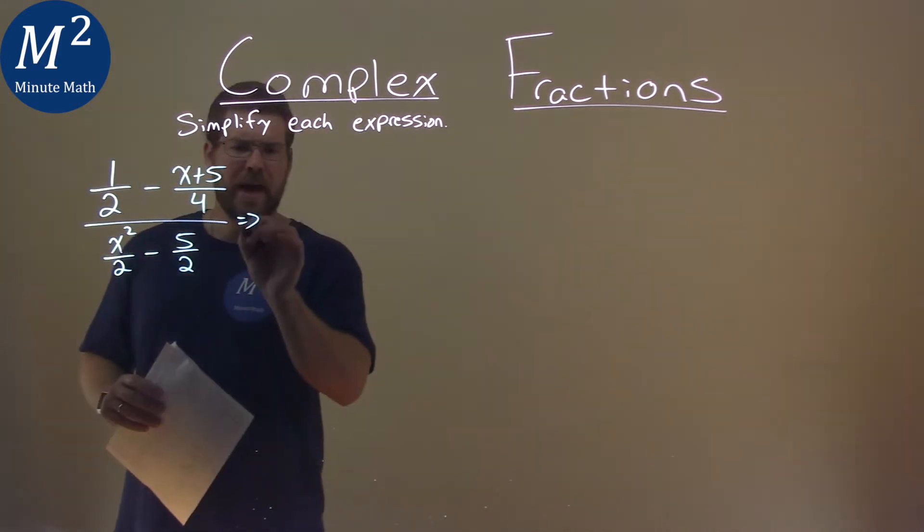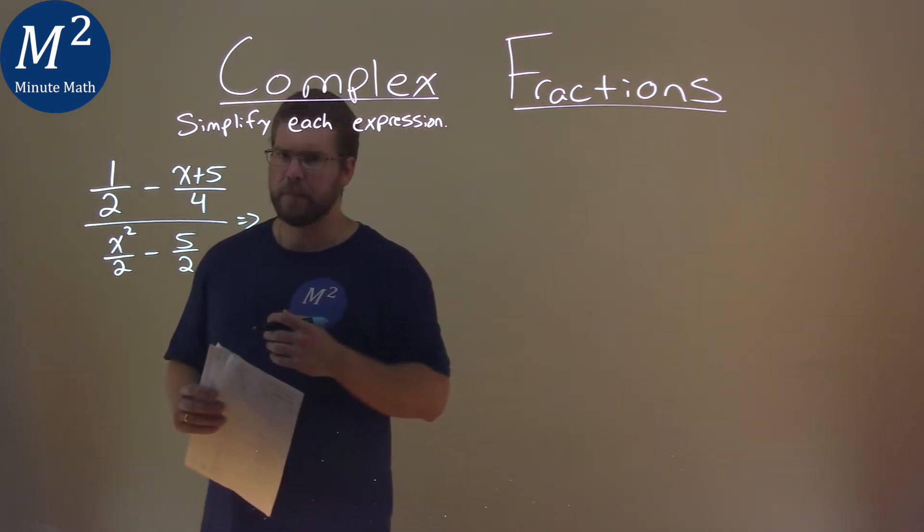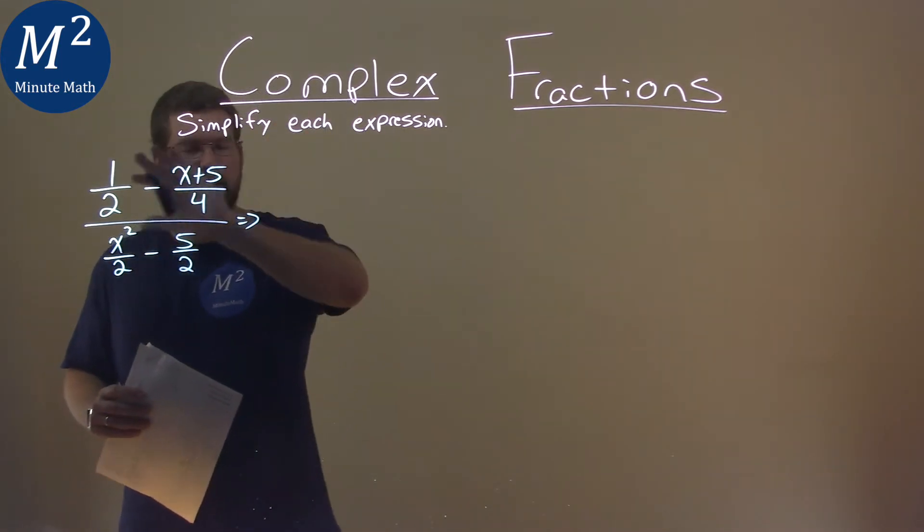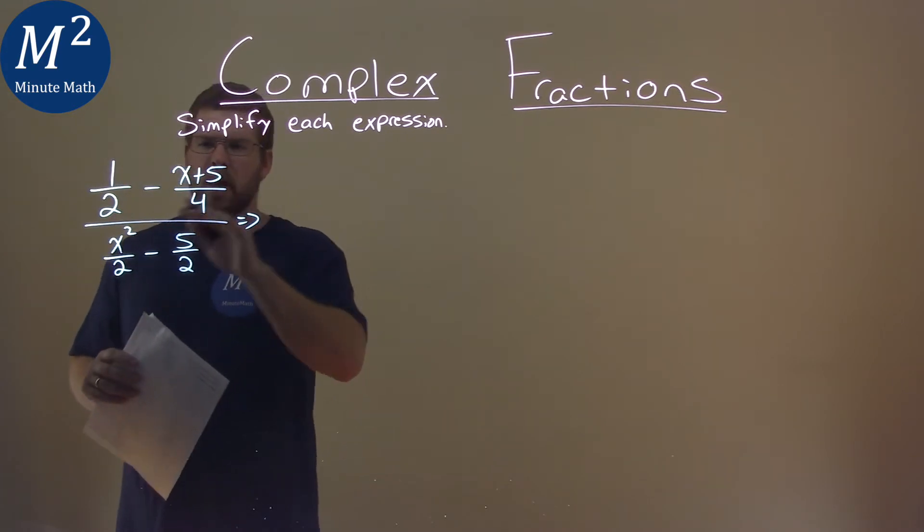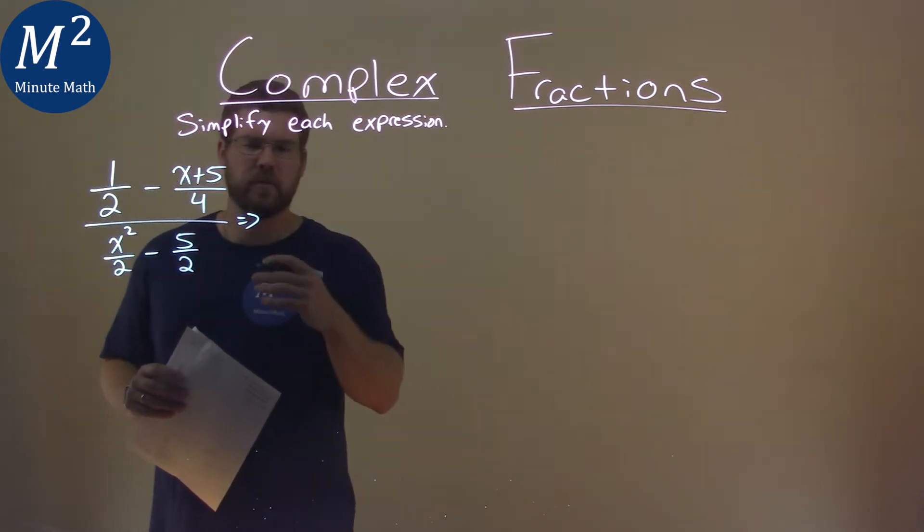But the main thing with adding and subtracting fractions is we have to have a common denominator. So let's think of the numerator here, the big part, as its own little problem. We have 1 half minus x plus 5 over 4.